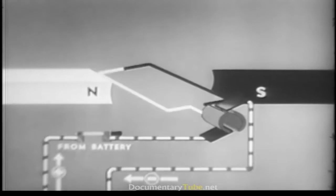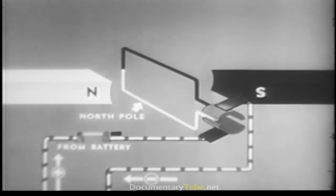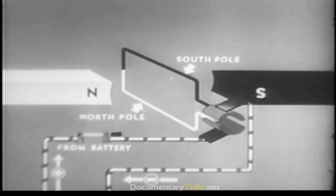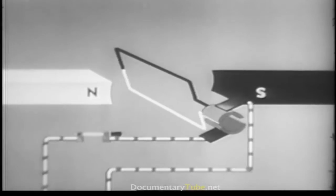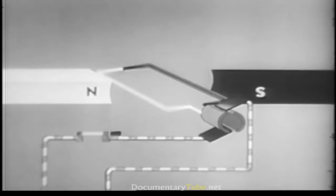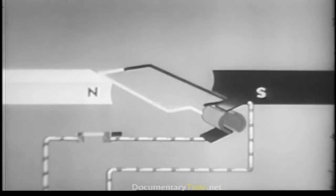As soon as current starts to flow through the wire loop, it becomes an electromagnet with a north pole and a south pole. As we have already mentioned, the north pole of the loop tries to get as close as possible to the south pole of the bar magnet.